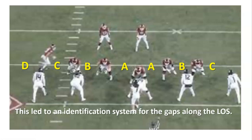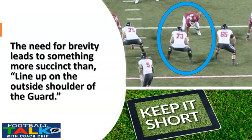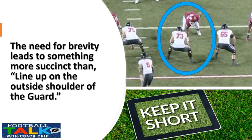We don't really use many tight ends anymore, so I just say 'outside' instead of D gap. The need for brevity leads to something more succinct. Things like 'line up on the outside shoulder of the guard' just weren't going to cut it anymore. So coaches said let's figure something out and keep it short. And they came up with a numbering system similar to what we use today.